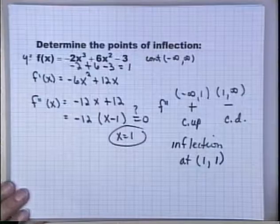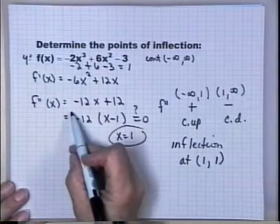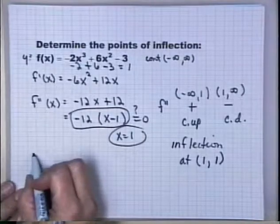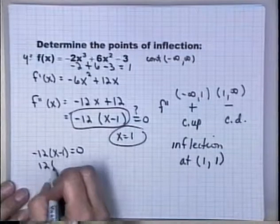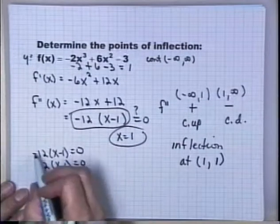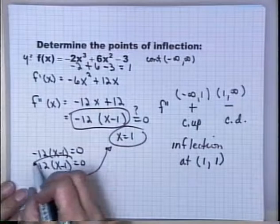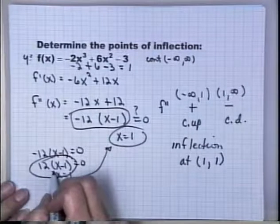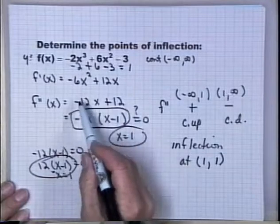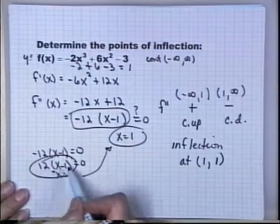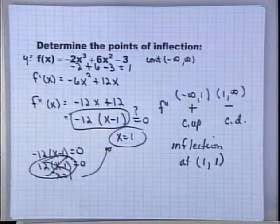One word of caution: when I factored -12x + 12 as -12(x - 1), some students rewrite this as 12(1 - x), which gives the correct critical number but the wrong sign for the second derivative. You must evaluate the second derivative exactly as it appeared — -12x + 12 — to determine its sign correctly, or you will get the concavity backwards.